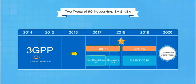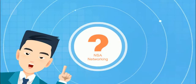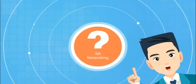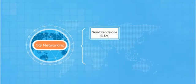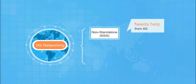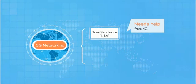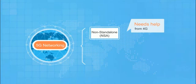First, a network with non-standalone architecture was defined, and then later, one with standalone architecture. So what do we mean by non-standalone network? Non-standalone architecture means that the 5G network cannot be deployed without a 4G network also being deployed. The 5G network cannot stand alone.